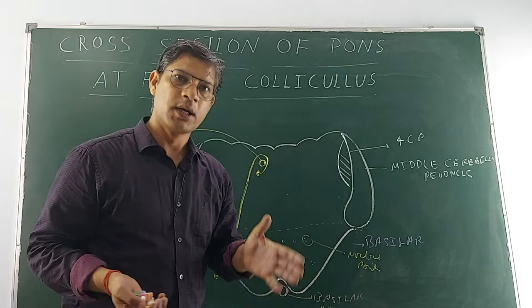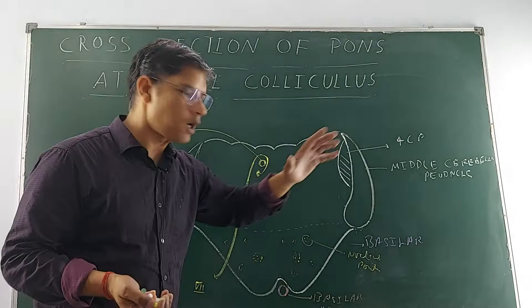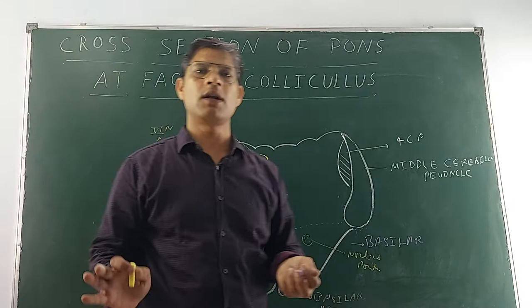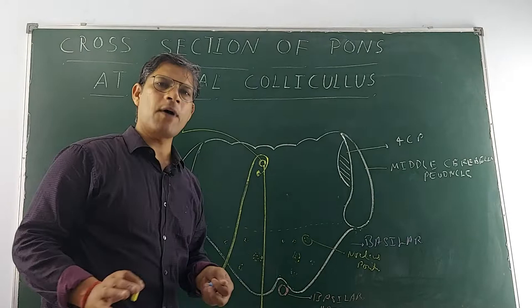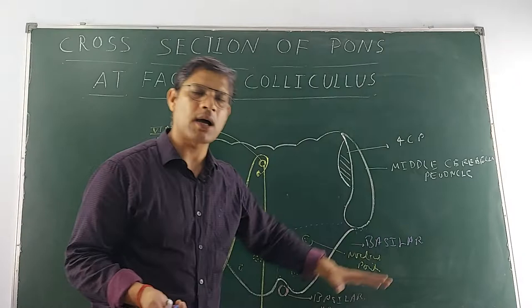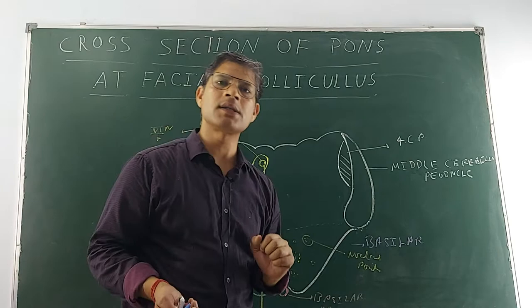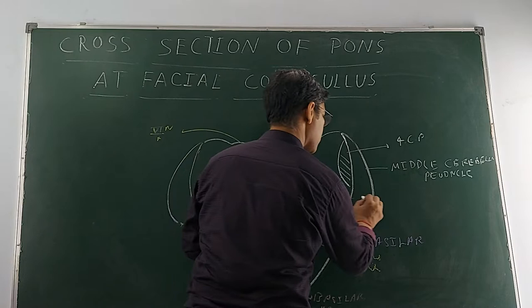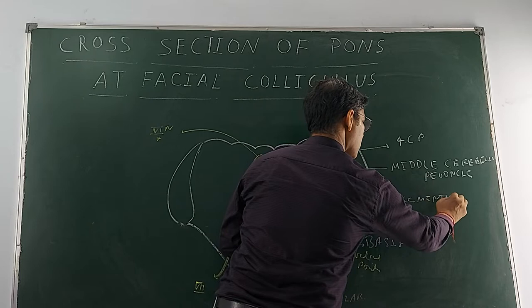So two things are very clear: there is the seventh nerve nucleus, and the fibers are looping around the abducent nucleus — this level is known as the facial colliculus level of the pons. Now, this part of the pons is divided into the ventral or anterior basilar part, which is always concerned with motor activity, and the tegmental part.